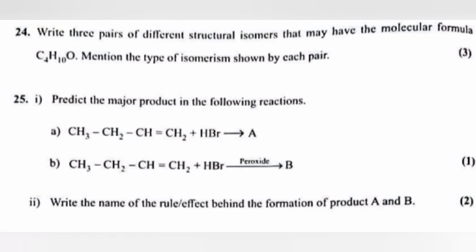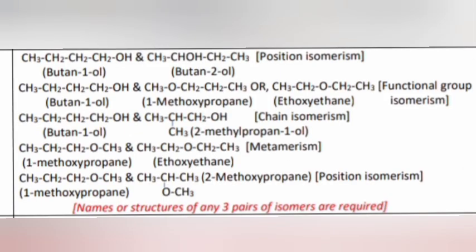Question 24: Write three pairs of different structural isomers that may have the molecular formula C4H10O. Mention the type of isomerism shown by each pair. Answer: Names or structures of any three pairs of isomers are required.